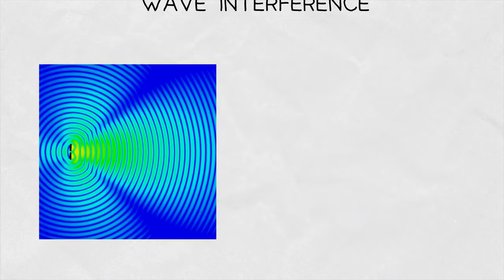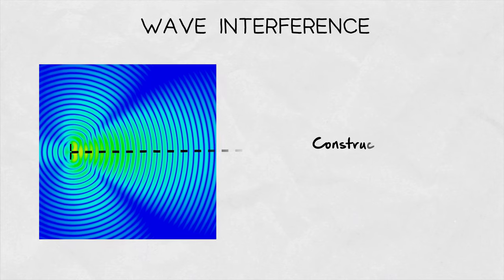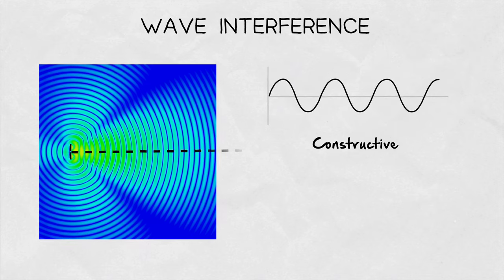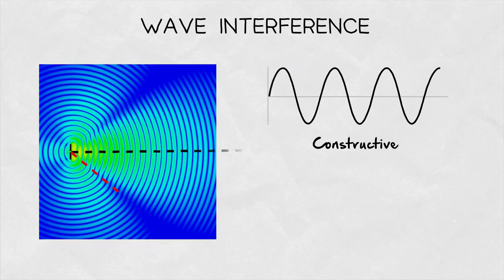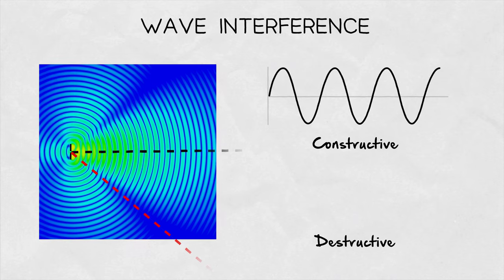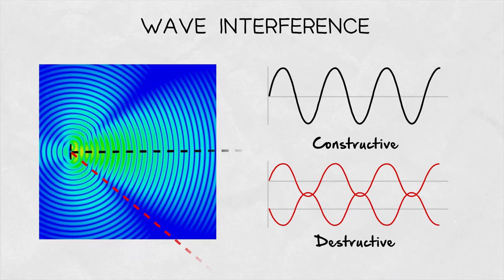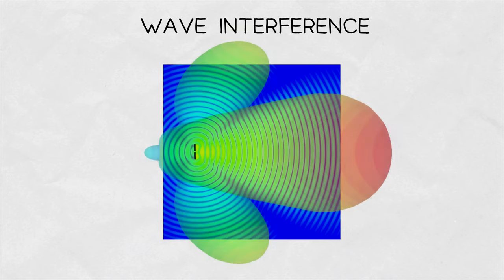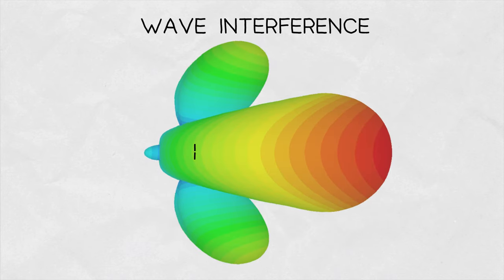This is caused by the wave interference. The maxima come from constructive interference when the waves from both patches have the same phase adding together resulting in a stronger wave. The minima come from the destructive interference, where the waves have an opposite phase cancelling each other out.